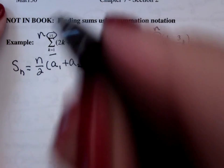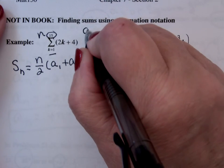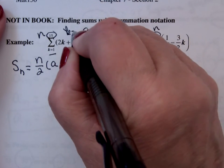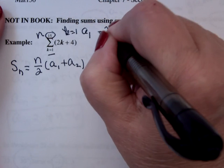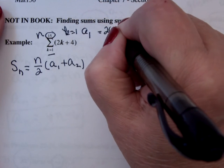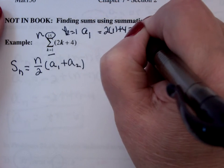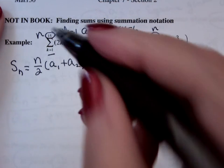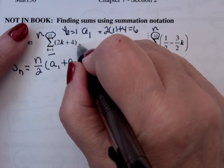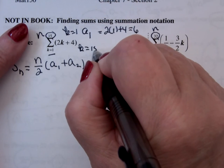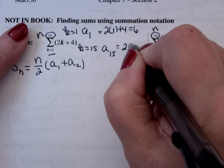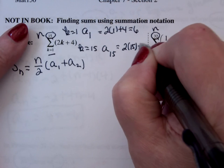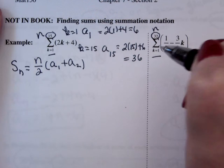The first term is when k equals 1. And that would be 2 times 1 plus 4, which is 6. The last term is when k equals 15. That's 2 times 15 plus 4, which is 34.